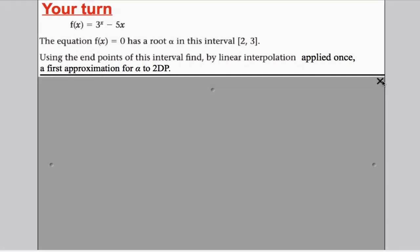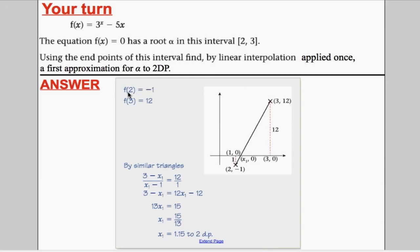And showing the answer here, this is what the answer should have been. If you had put 2 into the function, you get -1. Put 3 into the function, you get 12. There's a change of sign, so you know there is a root between 2 and 3. So, you draw a straight line between them. Using similar triangles, the height of this triangle divided by the height of this is 12 over 1. Must be the width of this triangle divided by the width of this, which is (3 - x₁)/(x₁ - 1). So, multiply everything out and work out x₁ is 1.15 to 2dp. That is one approximation using a linear interpolation.